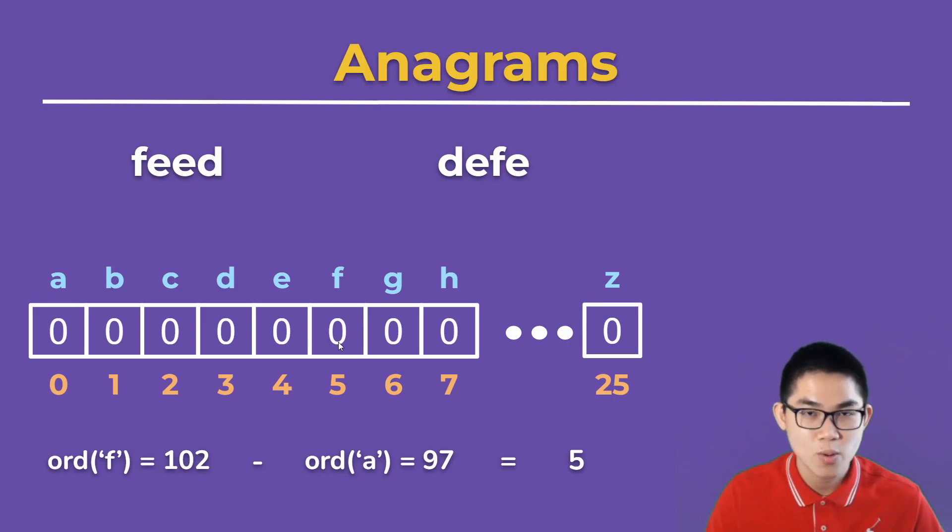So this 5 tells us the location of F inside this array. Then we increment the 0 to a 1 if we're going through the first word. How about the letter D? Well, the unicode of that is 100. We minus the unicode of A, and it's always going to be A, so we get 97, and then we get 3.